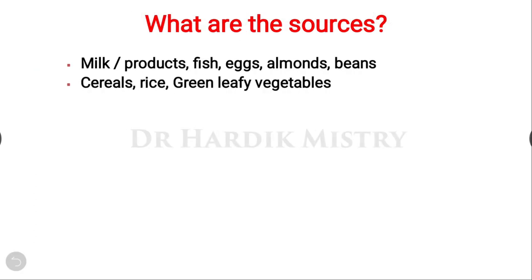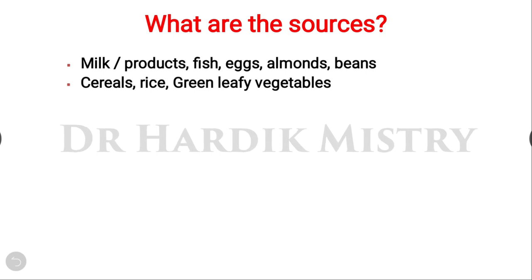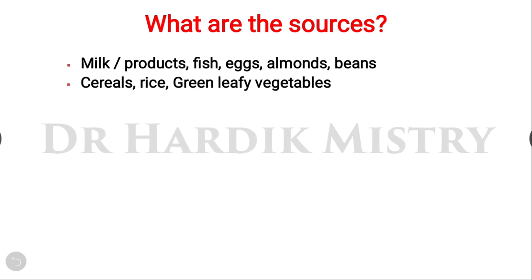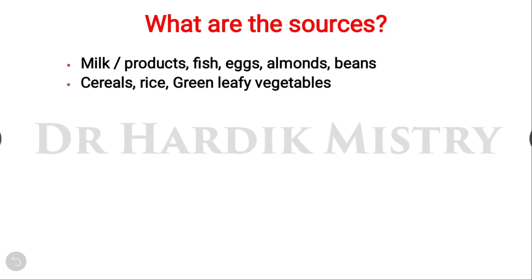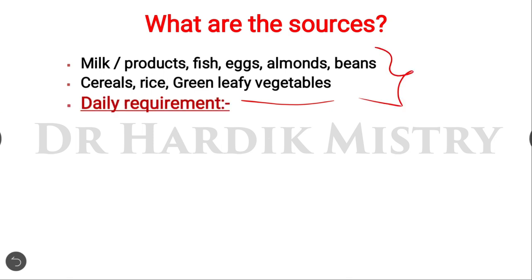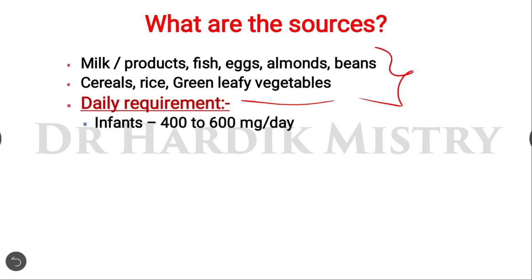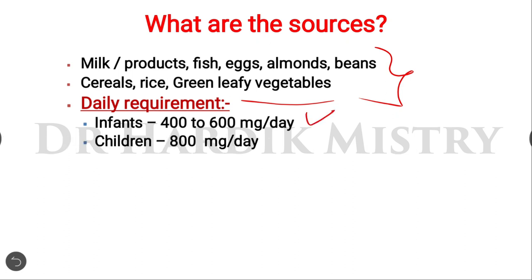What are the sources of calcium? Milk products, fish, eggs, almonds and beans, cereals, rice, and green leafy vegetables. The daily requirement of calcium for infants is 400 to 600 mg per day, for children 800 mg per day, and for adults 1200 to 1500 mg per day.